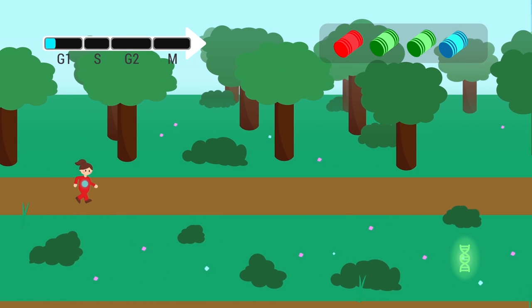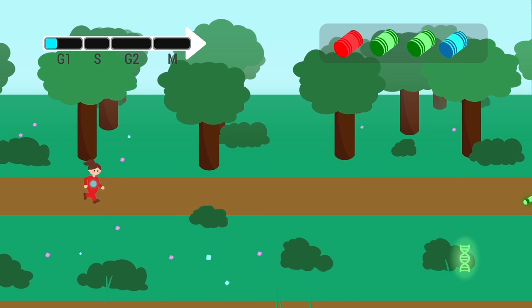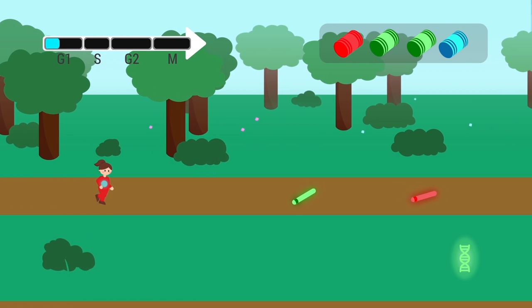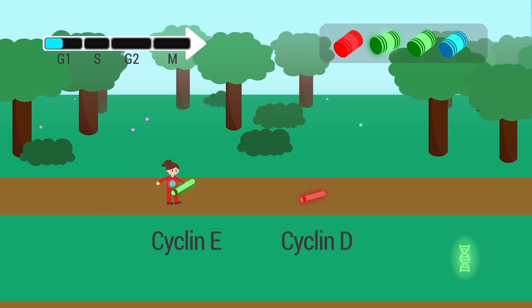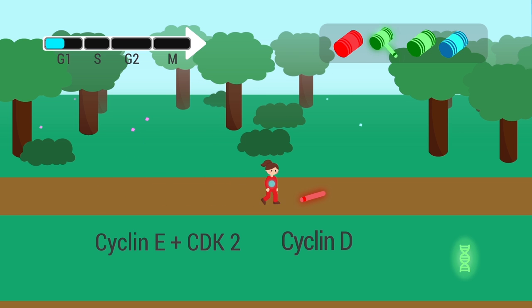The first checkpoint is found at the end of G1. In order to progress through the G1 checkpoint, the cell must activate two CDKs. CDK2 is activated by cyclin E and CDK4 is activated by cyclin D.